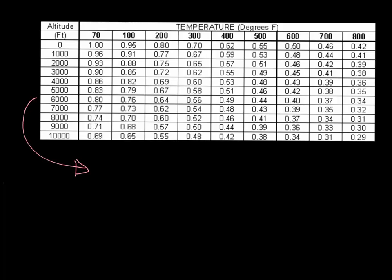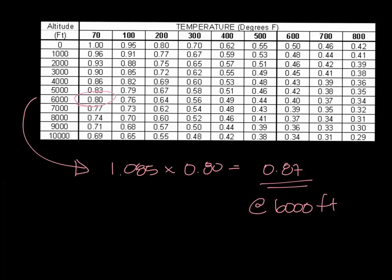Let's move this up and give myself some room. So you can see at 6,000 feet and 70 degrees, the correction factor is 0.8. So you take your 1.085 times your 0.8, and that gives you 0.87. So when you do your load equation, you would use 0.87 instead of 1.085 if you're at 6,000 feet.